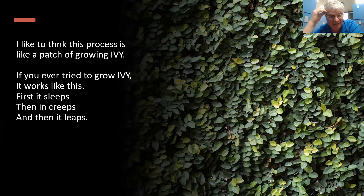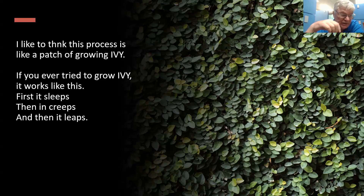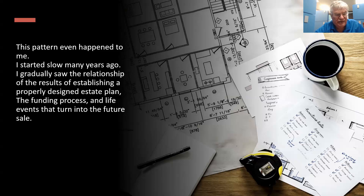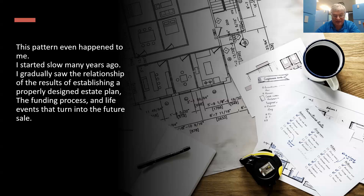I like to think this process is like my ivy approach. If you've ever tried to grow ivy on a wall, it works like this: first, it sleeps — you don't think it's ever going to go anywhere. Then it creeps, it starts moving up the wall, and then all of a sudden you wake up one morning and it's up toward the ceiling. First it sleeps, then it creeps, then it leaps. This pattern even happened to me.